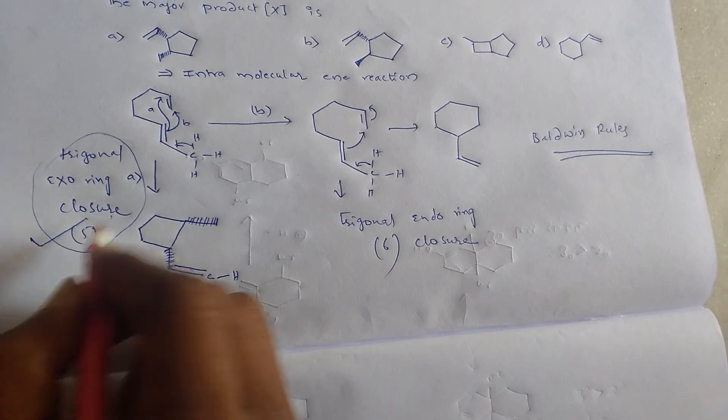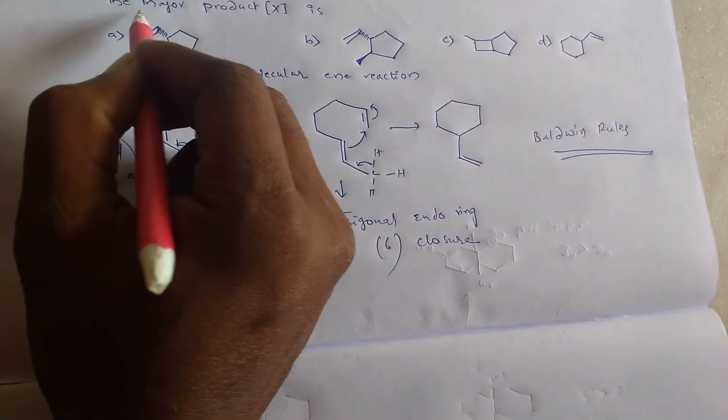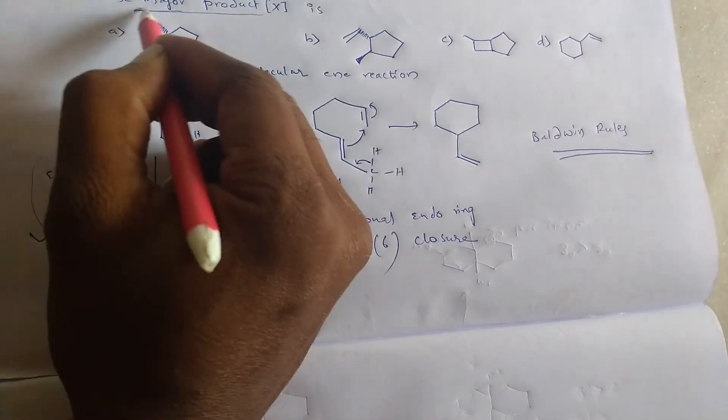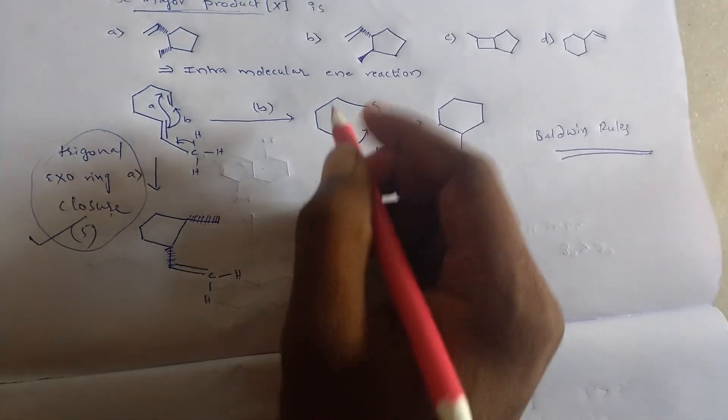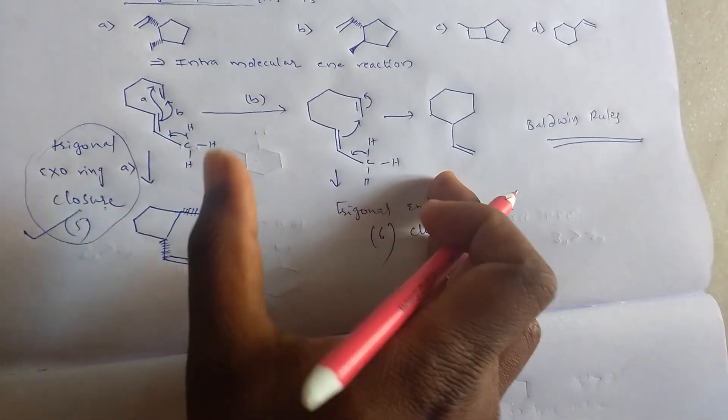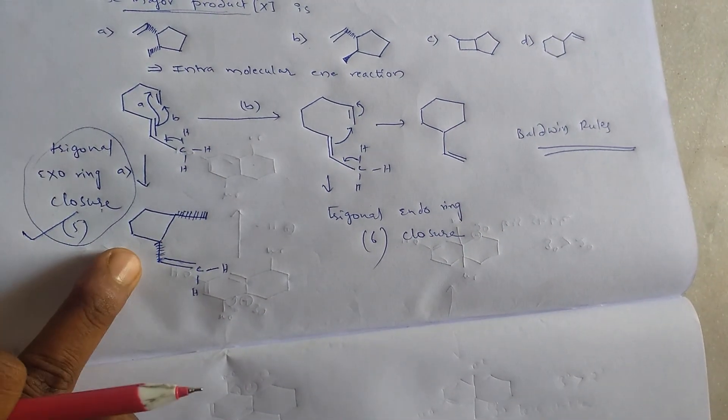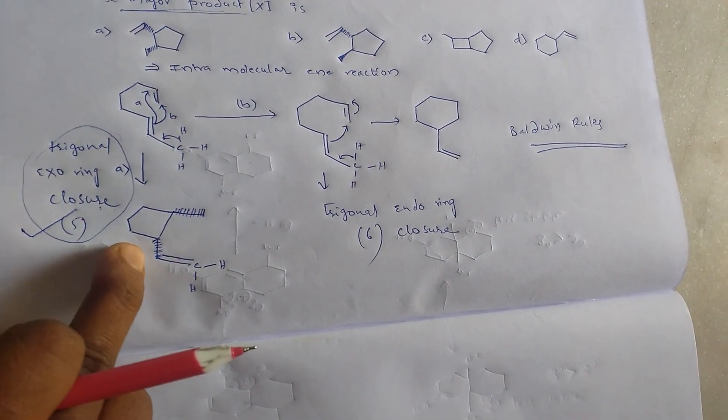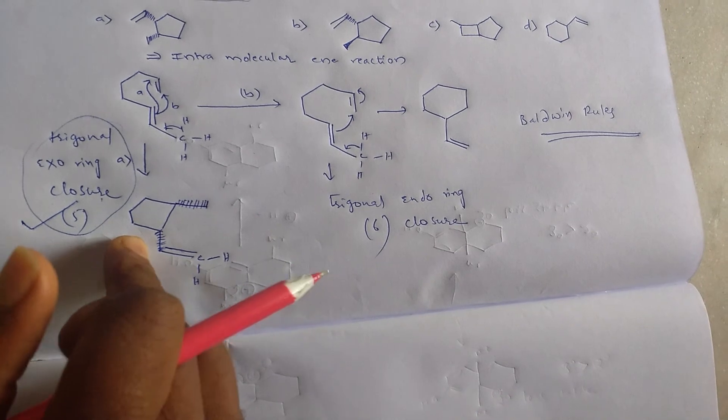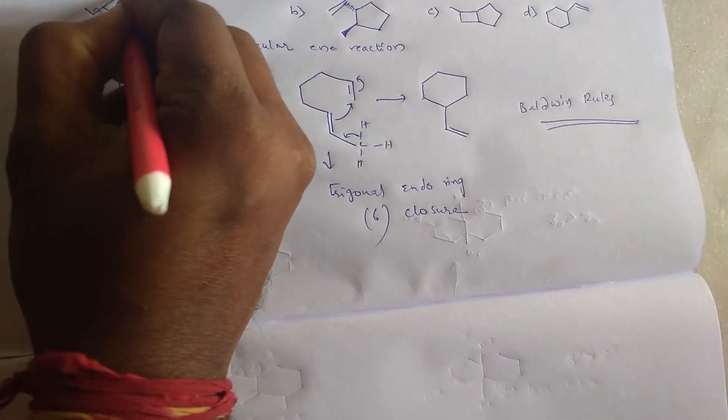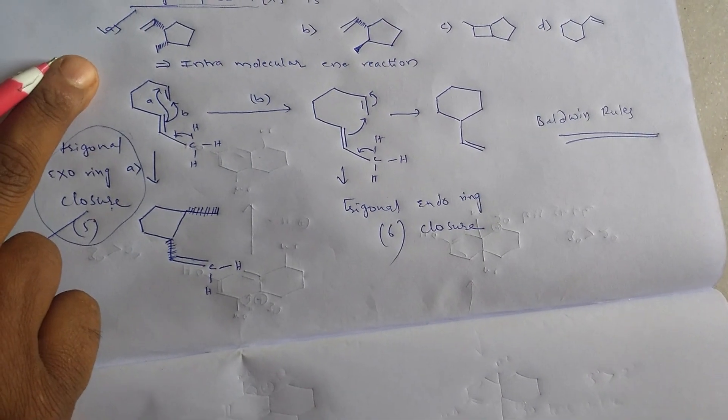So that's why already in this reaction, he asked the major product of this reaction. That's why there are two possibilities and two are possible, but the major product is the trigonal exo-ring closure product. So that's why answer is A. So A is the right answer for this reaction.